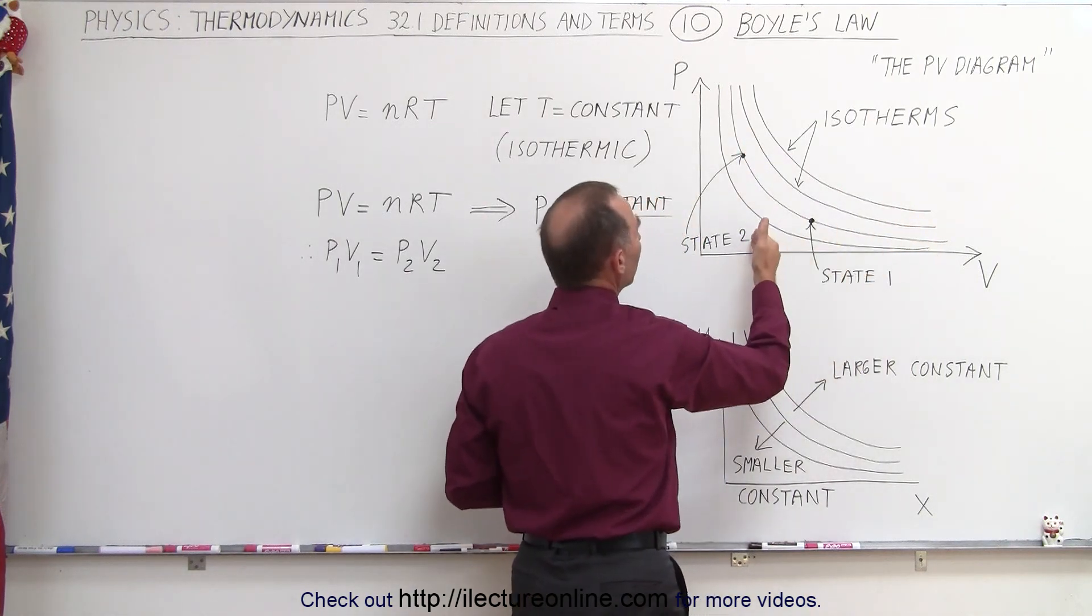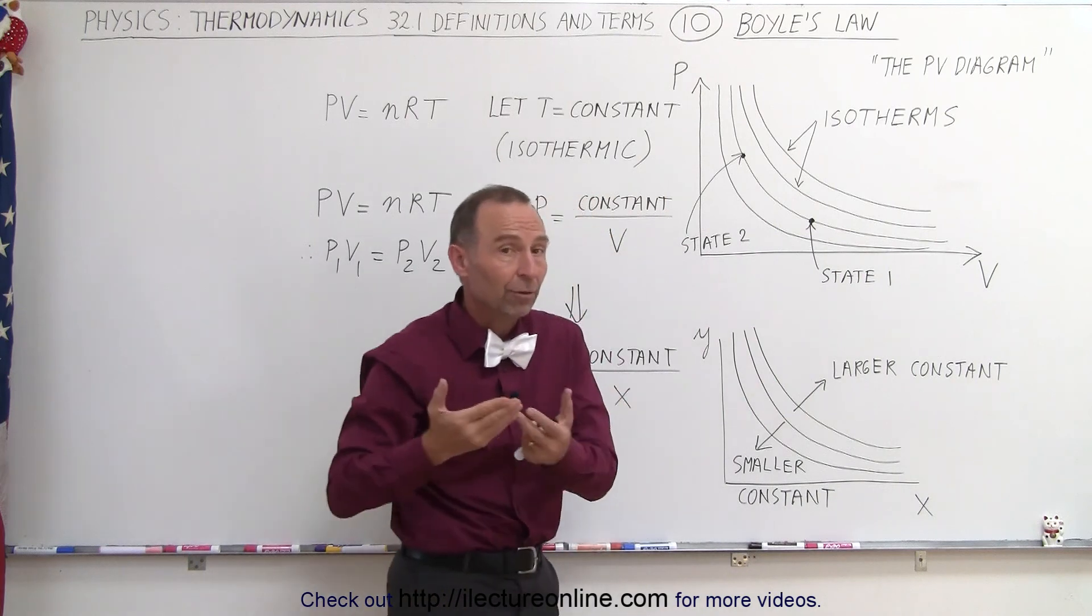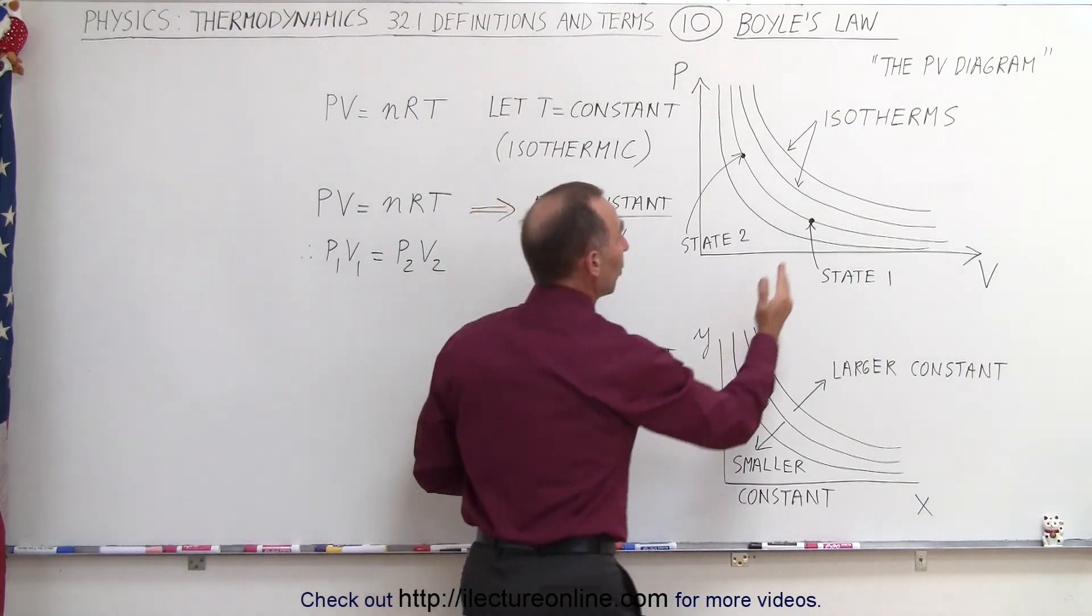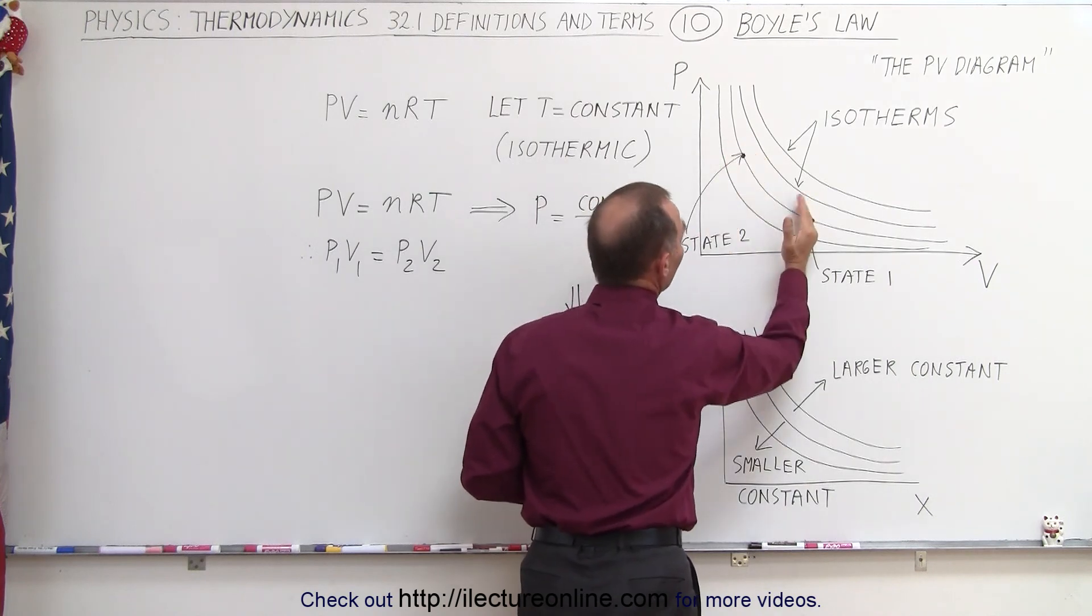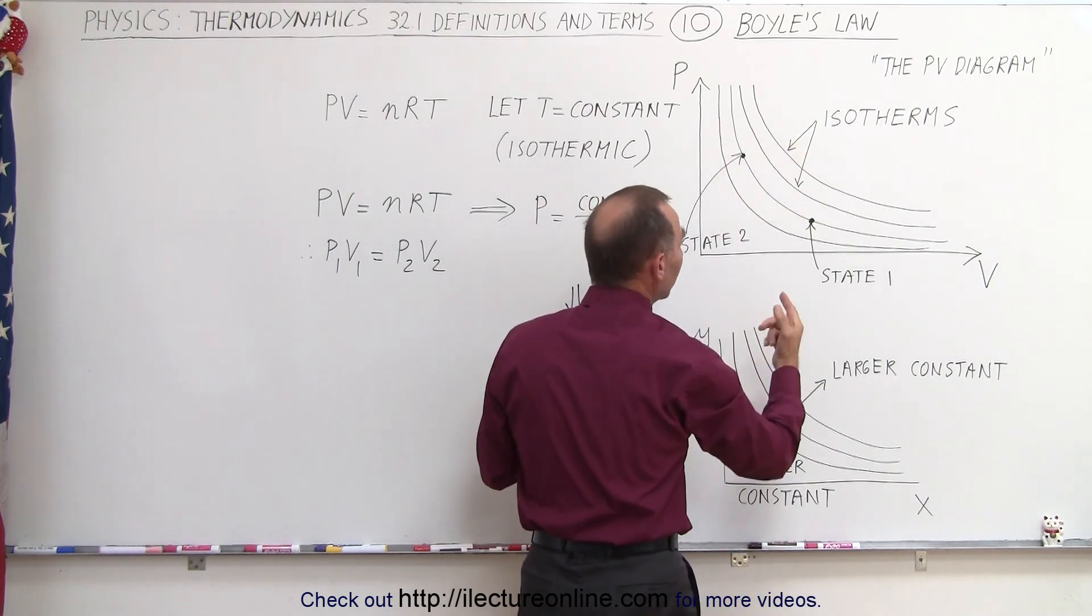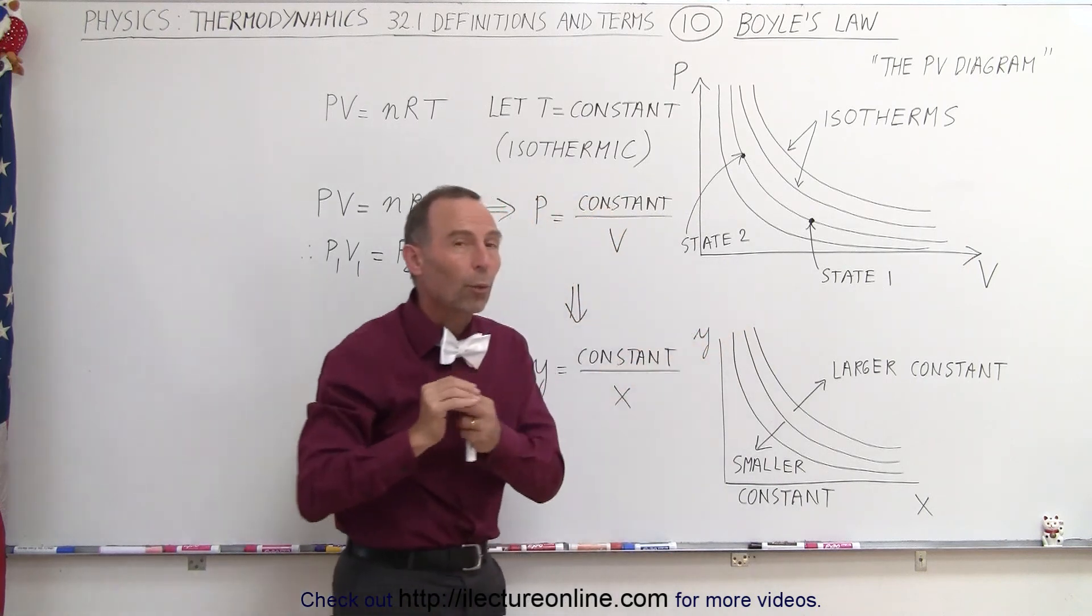Because after all, the product of P times V must remain a constant. So when we reduce the volume, the pressure increases. When we increase the volume, the pressure decreases, in such a way that the product of those two will always remain constant.